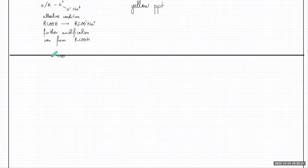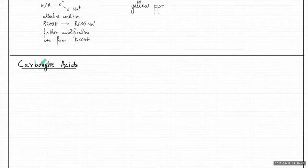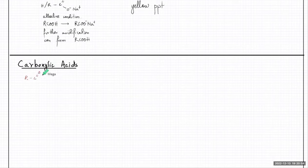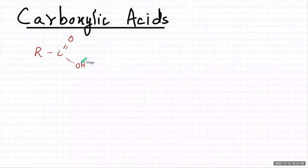It says carboxylic acids. Now carboxylic acids - your functional group was C double bond O and OH. So it was R, C double bond O and OH - that was what a carboxylic acid would look like. It's a highly polar compound and it's capable of forming hydrogen bonds.